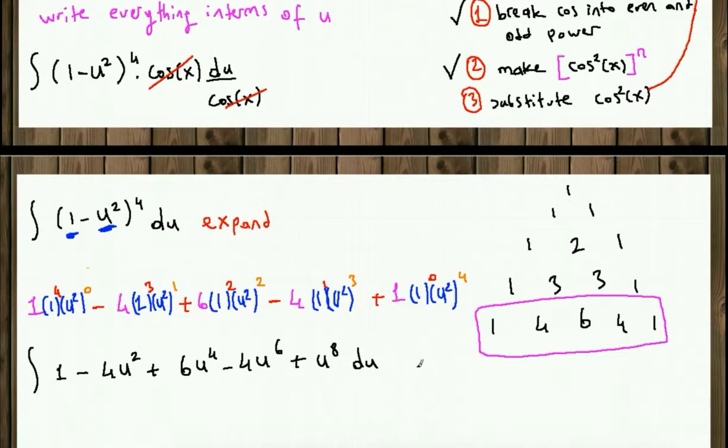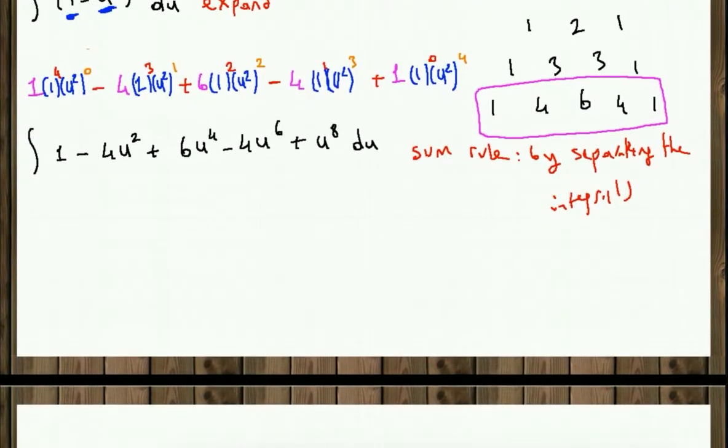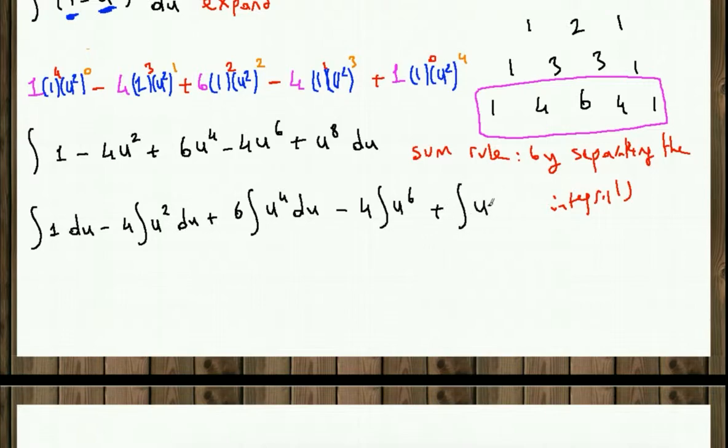Now we're going to apply the sum rule by separating the integrals. So integral 1 du minus 4 integral u squared du plus 6 integral u to the fourth du minus 4 integral u to the sixth du plus integral u to the eighth du. Now we're going to integrate each term one by one.